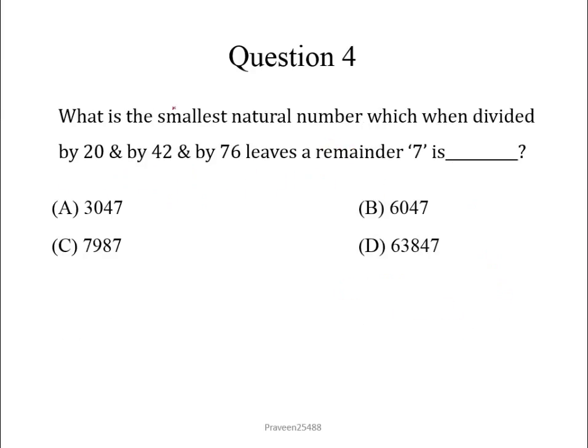Now question number 4. What is the smallest natural number which when divided by 20 and by 42 and by 76 leaves a remainder 7? To solve such type of problems, one formula I would like to give you.